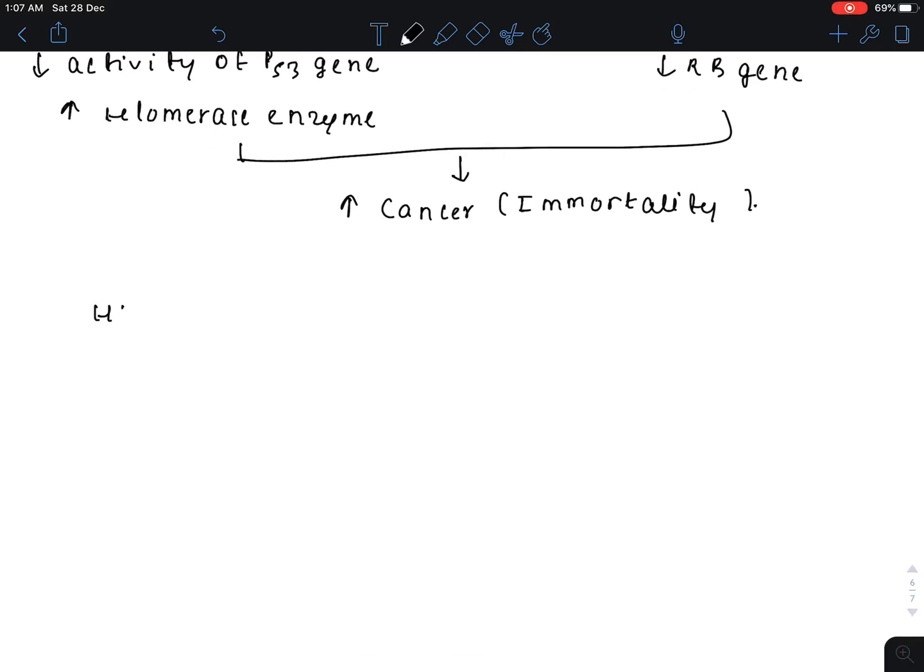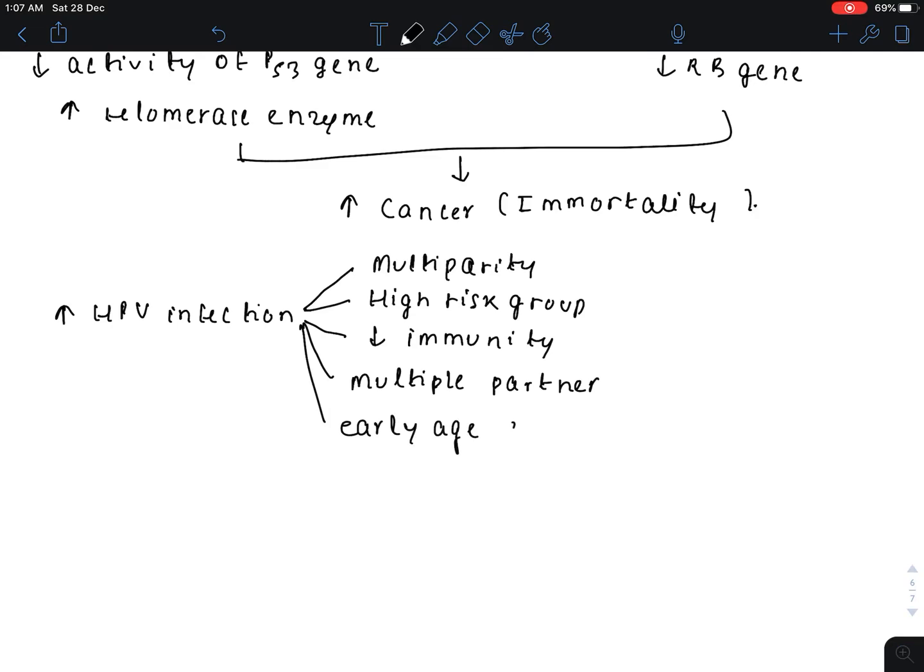How does infection of HPV occur? The increased chance of HPV infection is due to multiparity, high-risk group, decreased immunity, multiple partners, and early age of pregnancy.